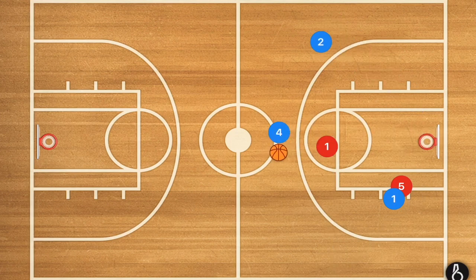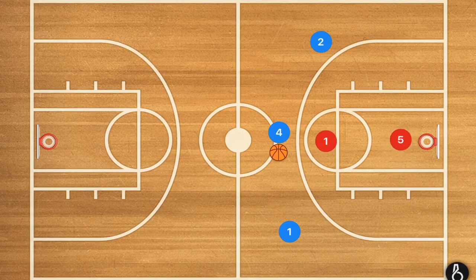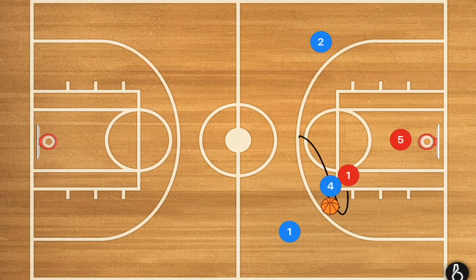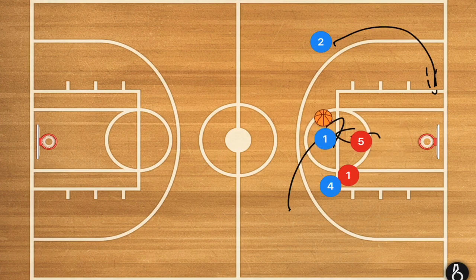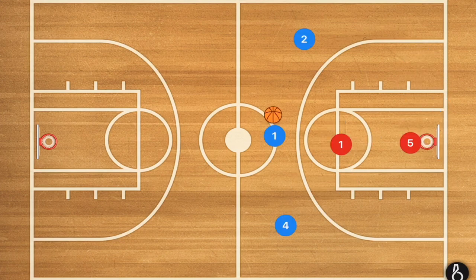But you can get more advanced: player four cuts across the key taking player one with him, while player two is leaking down — instead of a straight line cut he's going to take more of a curve. Player one will then get the drop pass back to him; this draws player five up and then you can pass down to player two for the layup.